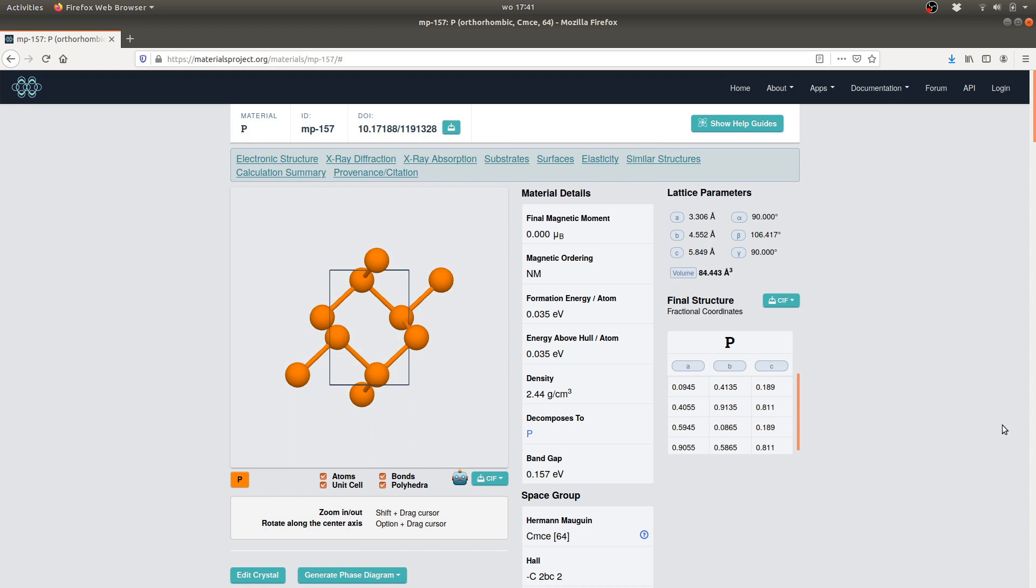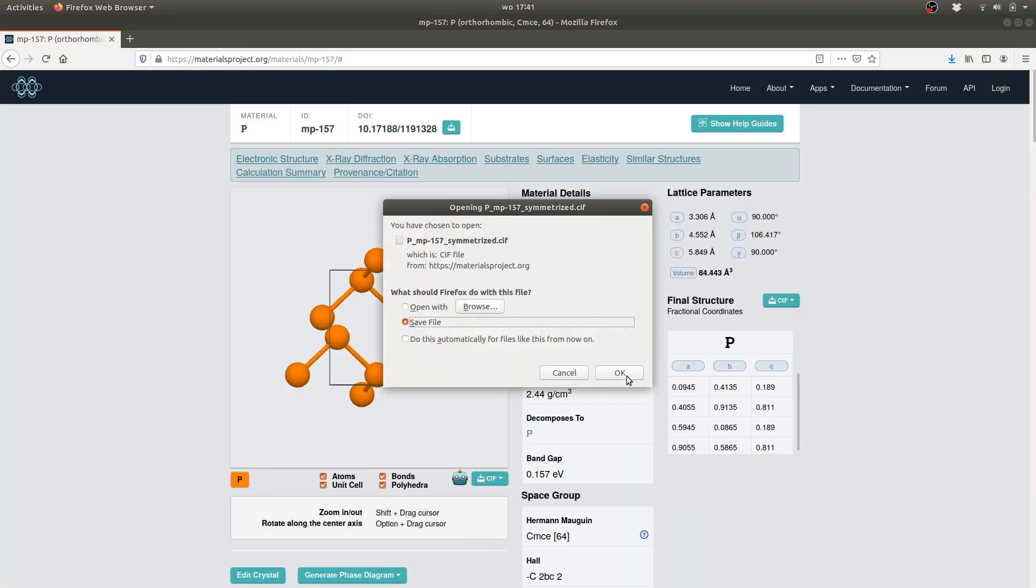This structure is rather easily found. In our case I resort to the website of the materials project to download the symmetrized structure variant in a cif file format.